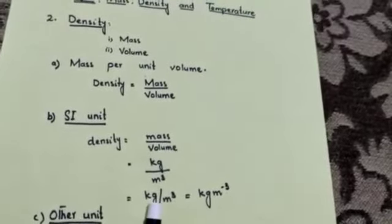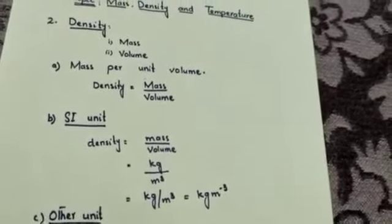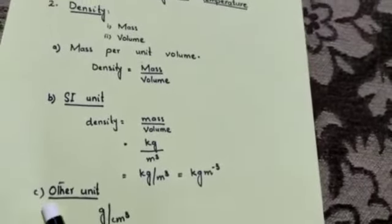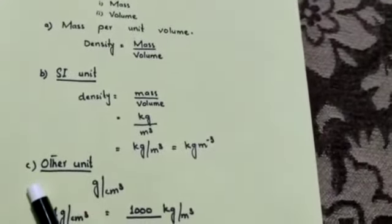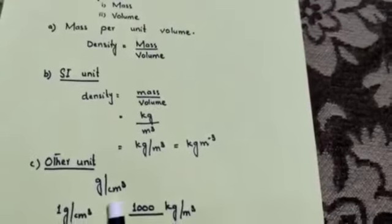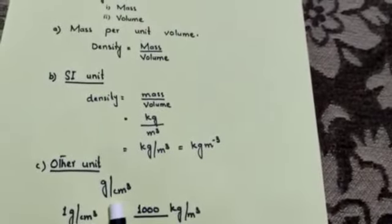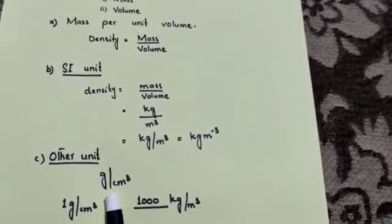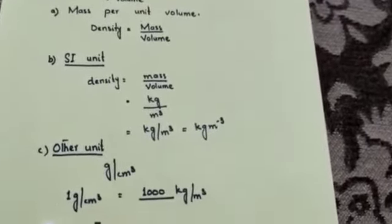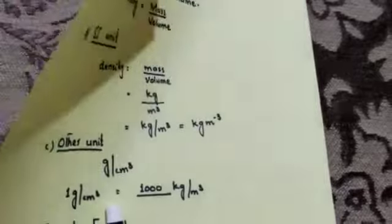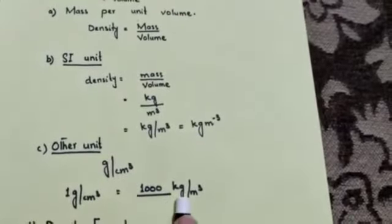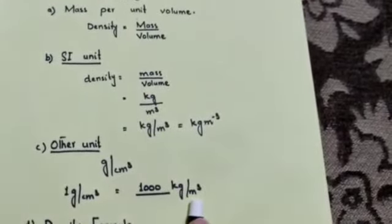These both are representations of the SI unit. The other unit used to find density is gram per centimeter cube, which is the smaller unit of density. One gram per centimeter cube is equal to 1000 kilogram per meter cube.